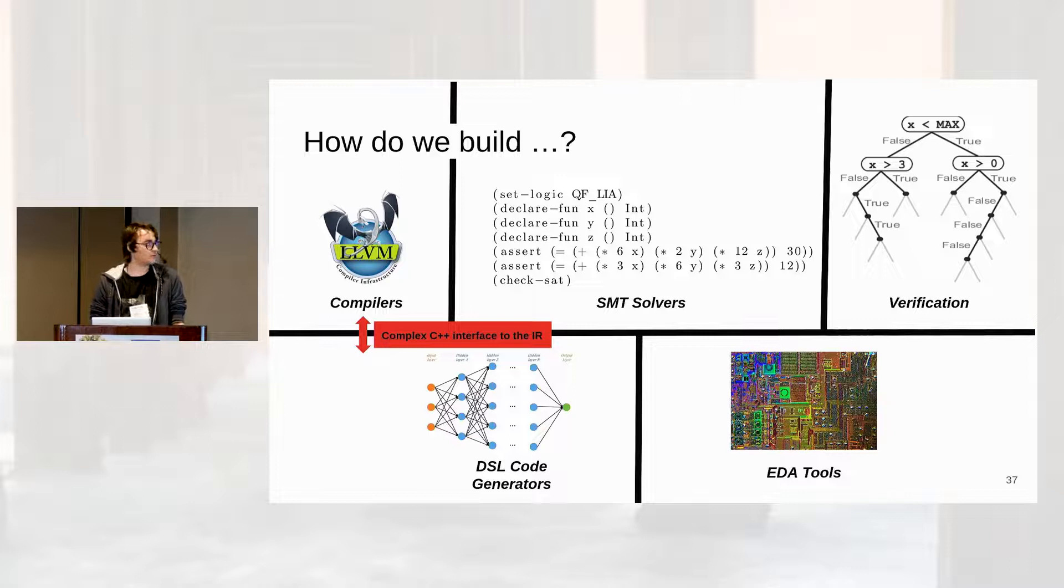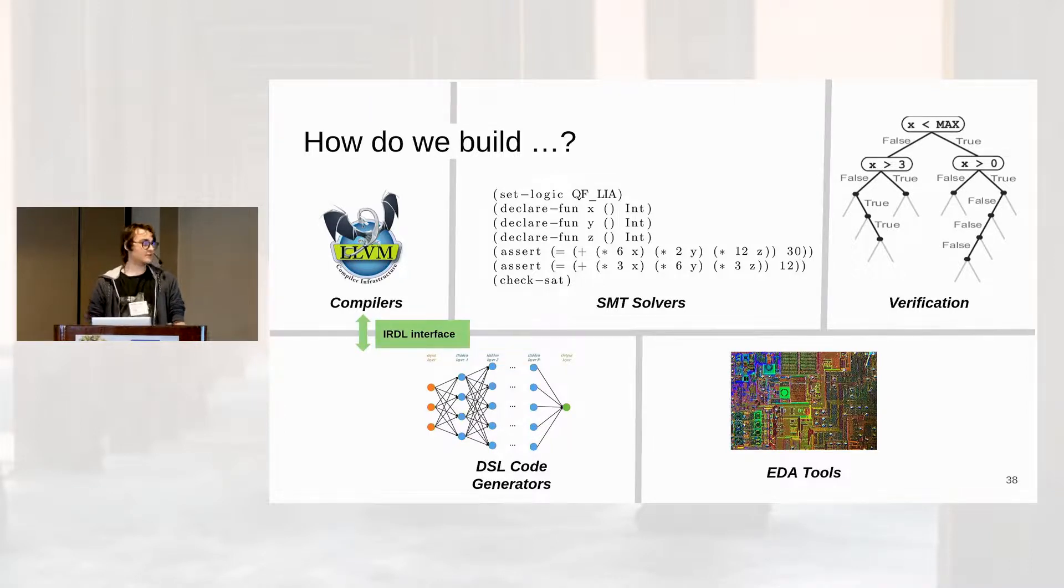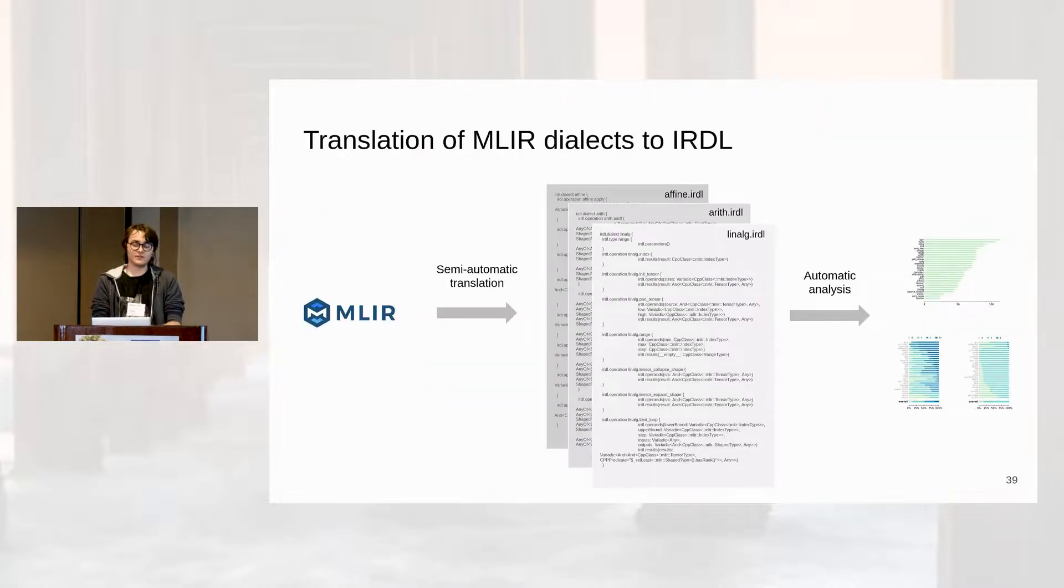And also since intermediate representations, especially in MLIR, get updated often and change a lot, the C++ interface might break a lot. So what I propose is that with this IRDL, we can use this to provide an interface between the compiler and any of these tools by having this declarative format that is easily introspectable. We provide one example in our paper, which is we translate the MLIR dialects into our IRDL representation and then we use an automatic tool to give some analysis on the dialects we currently have.